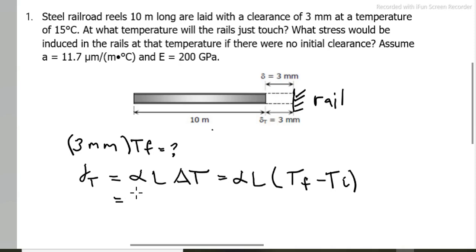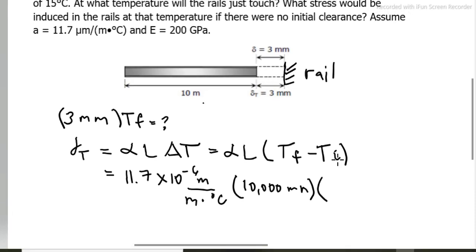Substitute the thermal coefficient of 11.7 micrometers - let's convert to meters times 10 to the negative 6 meters per meter per degree Celsius - times the length of 10 meters, which is 10,000 mm, times change in temperature, unknown minus initial of 15 degrees Celsius.